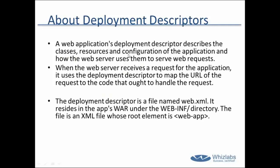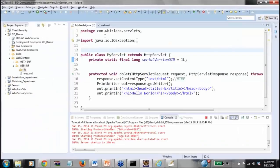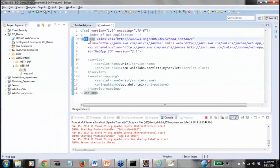The deployment descriptor is your web.xml file. It describes the classes, resources, and configuration of the application. When the web server receives a request, it uses the deployment descriptor to map the URL — like abc.html — to the appropriate resource. The deployment descriptor resides under the WebINF directory, and the root element is web-app.